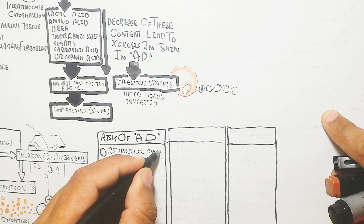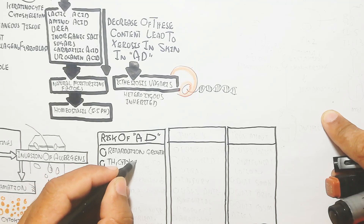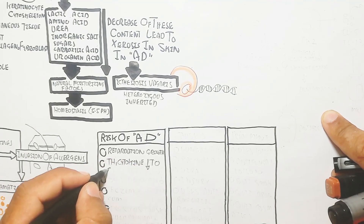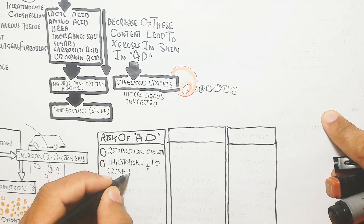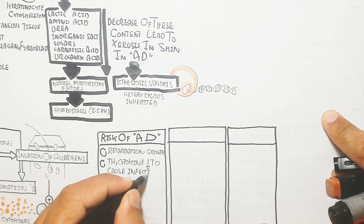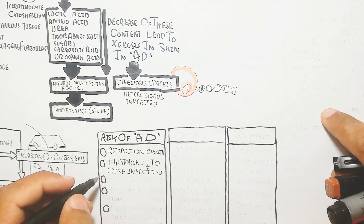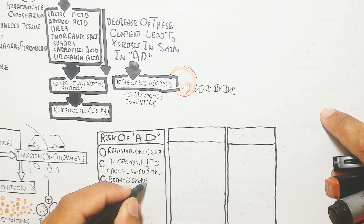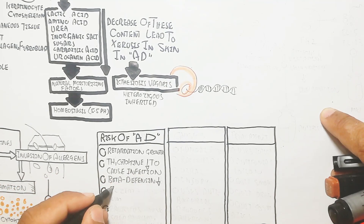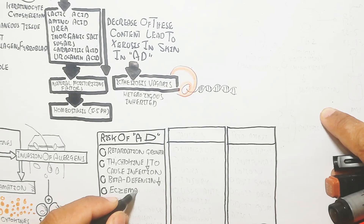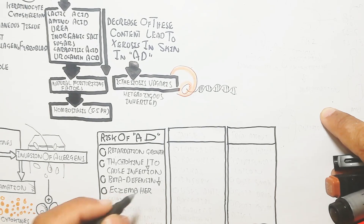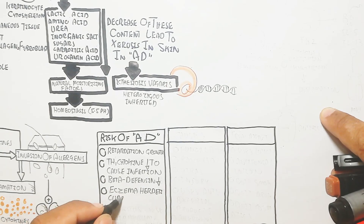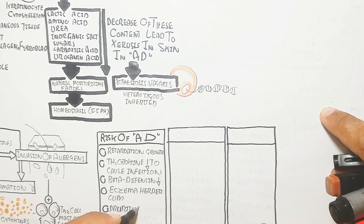The risks of atopic dermatitis include retardation of growth due to suppression of growth hormone, decreased T helper 1 cytokines leading to increased infection susceptibility, and decreased beta-defensin protein.